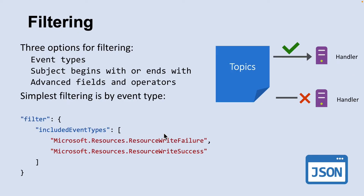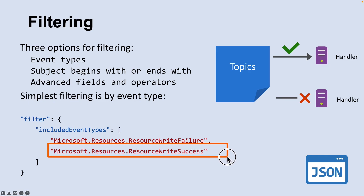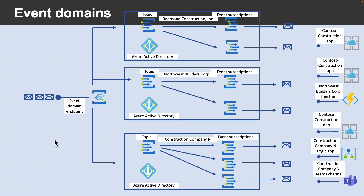Let's look into filtering on Event Grid. By default, all event types for the event source are sent to the endpoint. You can decide to send only certain event types to your endpoint. For example, you can get notified of updates to your resources but not notified for other operations like deletions. In that case, filter by the Microsoft.Resources.ResourceWriteSuccess event type and provide an array with the event type, or specify all to get all event types for the event source.